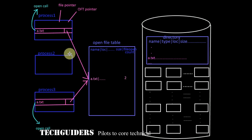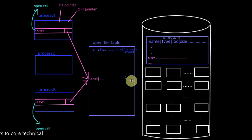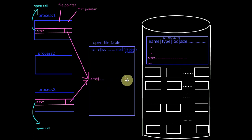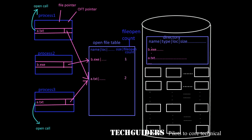Whenever a file is referred to by any process, the file open count will be incremented. Currently, two processes have opened the file a.txt, hence the file open count for this file is 2. Similarly, one process has opened the file b.exe, thus the file open count is 1.